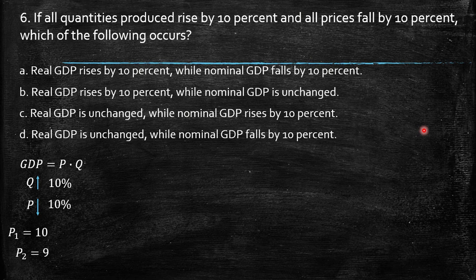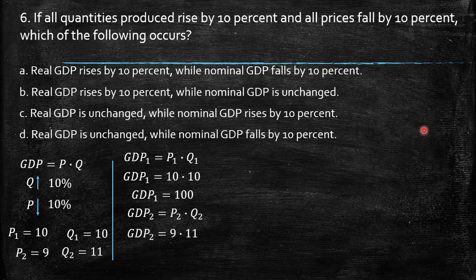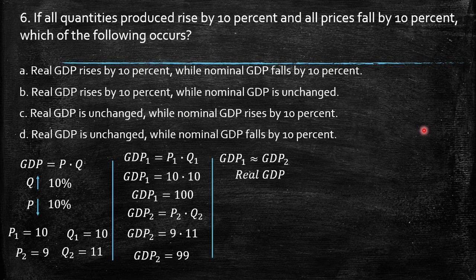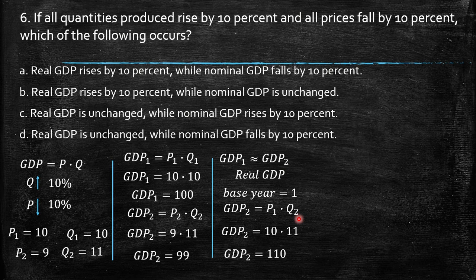Take a price of 10 with a 10 percent decrease giving us 9, and a quantity of 10 with a 10 percent increase giving us 11. In period 1, GDP equals price times quantity: 10 times 10 equals 100. In period 2, GDP equals 9 times 11 equals 99 — so nominal GDP is approximately unchanged. For real GDP using the base year prices, GDP in period 2 equals price from period 1 times quantity in period 2: 10 times 11 equals 110.